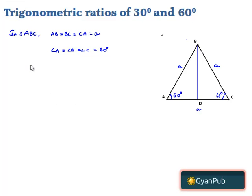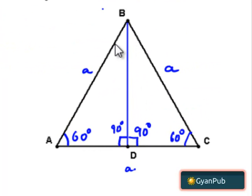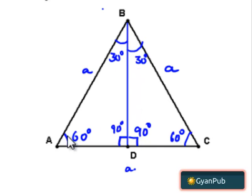Now, let us drop a perpendicular BD to base AC. Then we can say that angle BDA is equal to angle BDC, both equal to 90 degrees. And we know that in an equilateral triangle, the altitude bisects the vertex angle. That means here both the angles will be equal to 30 degrees each. In an equilateral triangle, the median and altitude are the same. Therefore, it also divides the base into two equal halves — that is, AD is equal to A by 2 and DC is equal to A by 2.